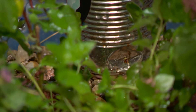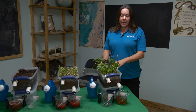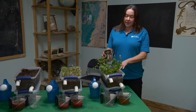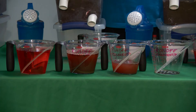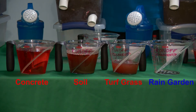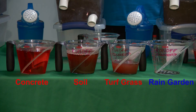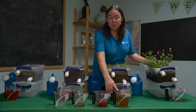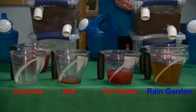We didn't add any pollutants to this model, but if we had, the water would still be cleaner than the others. We also have the rain cistern here that has collected water. As our results show, the turf grass, soil, and concrete had the most runoff, which can have a negative impact on flooding, erosion, and water pollution. The rain garden absorbed and filtered the most water, which helps reduce flooding, erosion, and water pollution in the area. Rain gardens can also be an effective way to solve drainage problems on some properties.